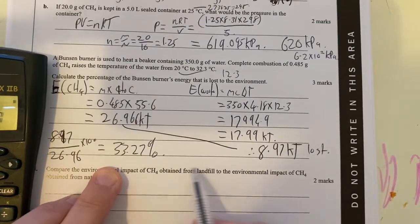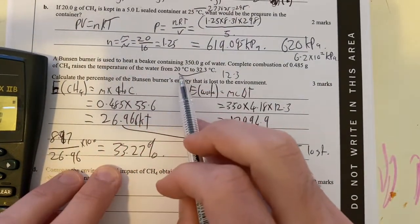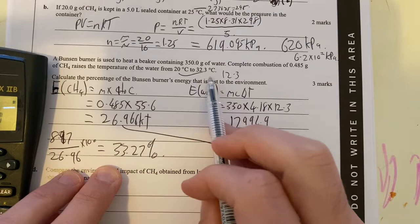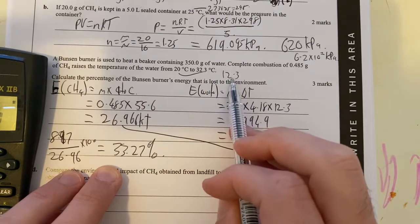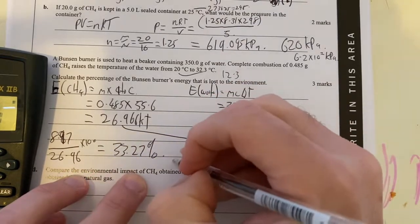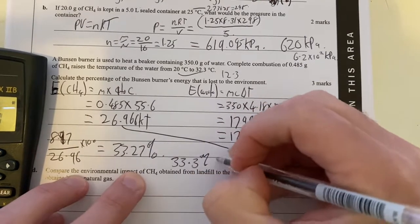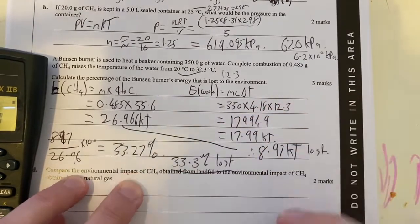Again, let's look for significant figures. I can see that this here is going to be three significant figures is the lowest, so it's going to be 33.3% lost, and that's my answer.